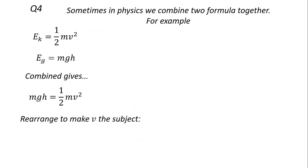Sometimes in physics we combine two formulas together. For example, kinetic energy equals half mv squared, and gravitational energy equals mass times gravity times height. When you combine those two, you get mgh equals half mv squared. I want you to take that combined formula and rearrange it to make v the subject. So pause the video while you work for that question, and I'm going to move on to the answers.